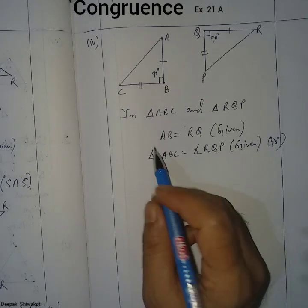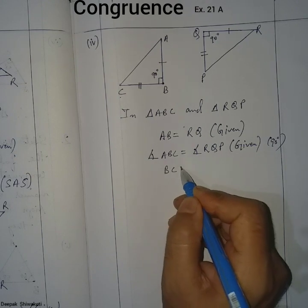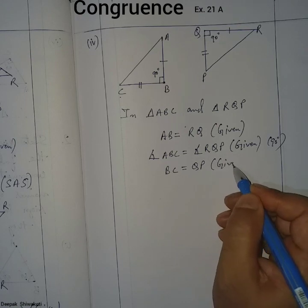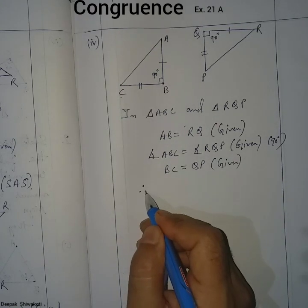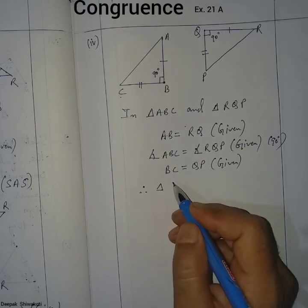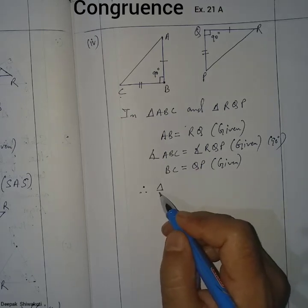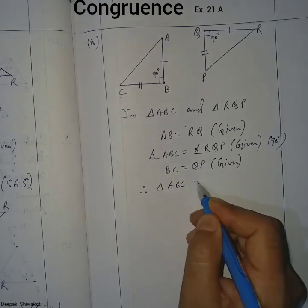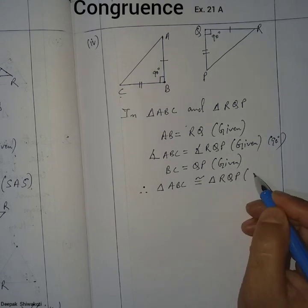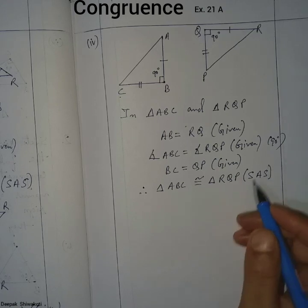Side BC and QP are also given as equal in the figure. Therefore, by Side-Angle-Side condition, triangle ABC is congruent to triangle RQP.